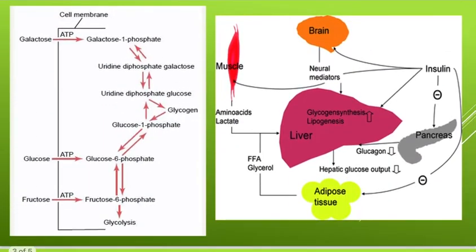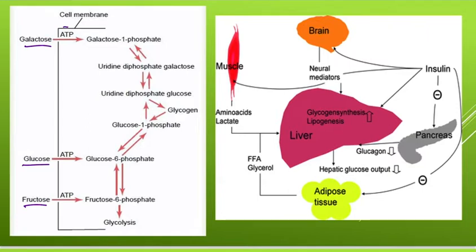Here is a diagram showing the cell membrane and cell interior, where galactose, glucose, and fructose are linked with one another forming glycogen through the glycolysis process. Galactose combines with ATP to form galactose-1-phosphate, which further forms UDP and then UDP-glucose, which mainly produces glycogen. Fructose produces fructose-6-phosphate. All of these are interlinked and feed into the glycolysis process in the cell.